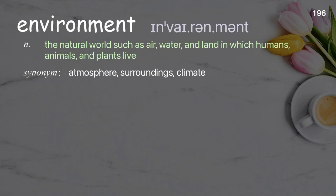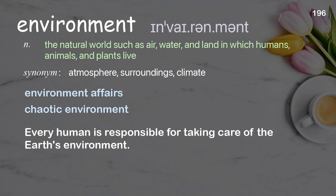Environment. The natural world such as air, water, and land in which humans, animals, and plants live. Examples: environment affairs, chaotic environment. Every human is responsible for taking care of the Earth's environment.